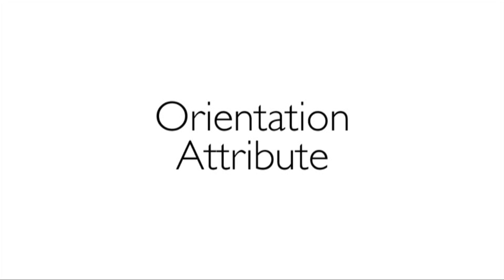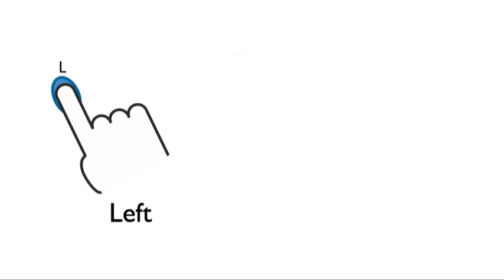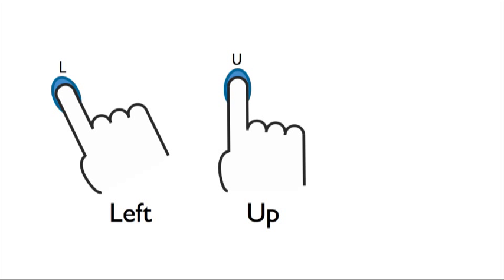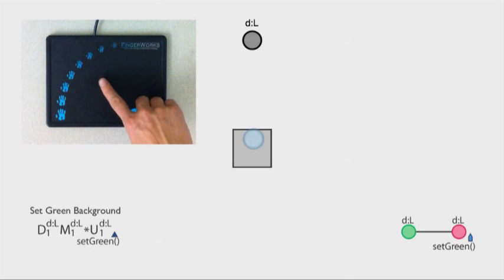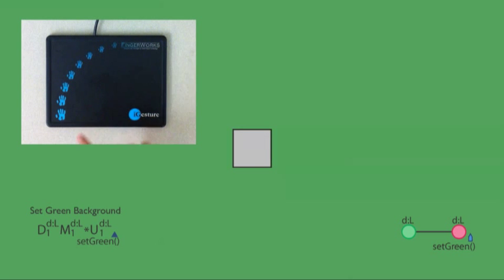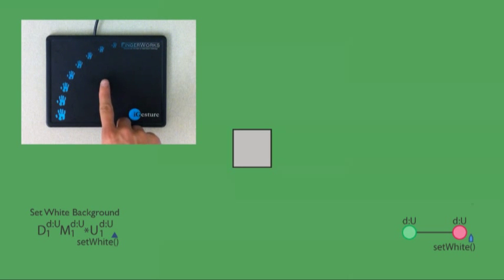The orientation of a touch is divided into three levels: left, up, and right. Here, the orientation of the touch specifies the color to set the background.